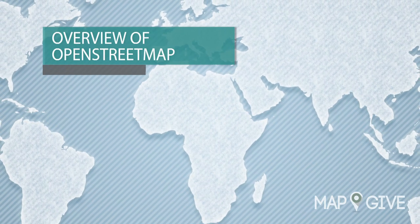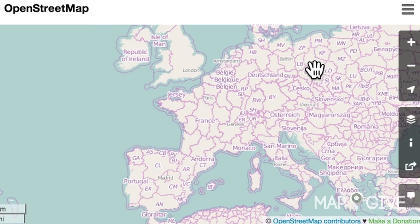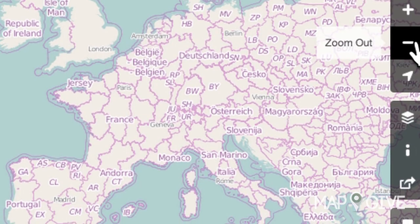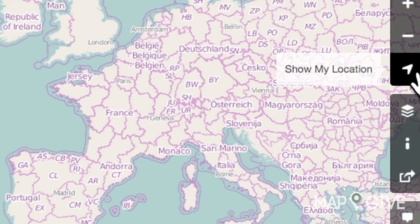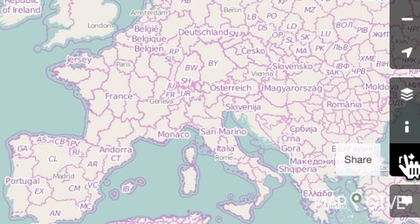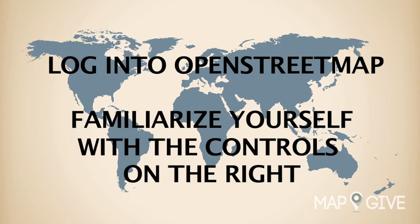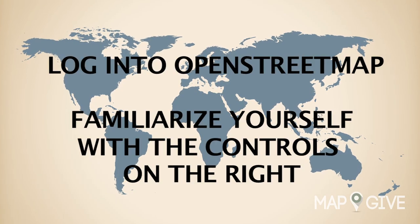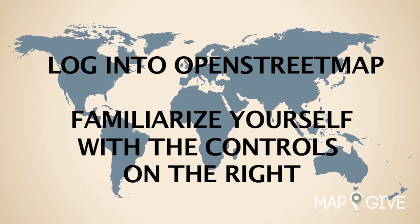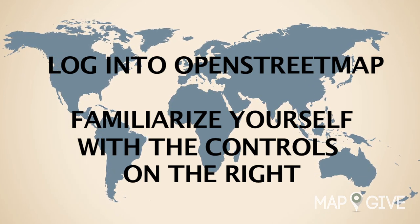Overview of OpenStreetMap. To begin, you will log in to OpenStreetMap. Once logged in, you will see the map. To the right of the map are the map controls — you can zoom in, zoom out, and view your current location. You can also select between layers, view the map key, share the map, or make comments on a particular section. Pause this video, log in, and take a moment to locate these features, then return here to learn to search and zoom in and out.